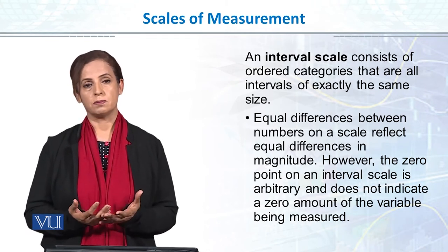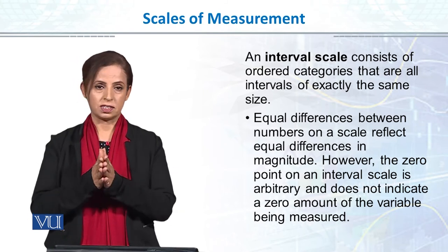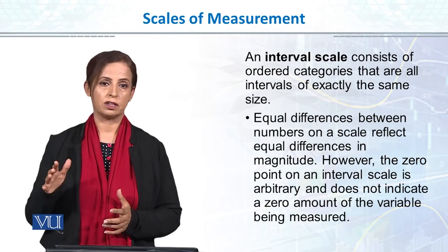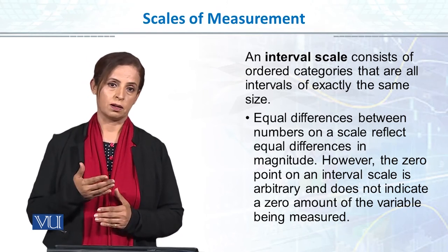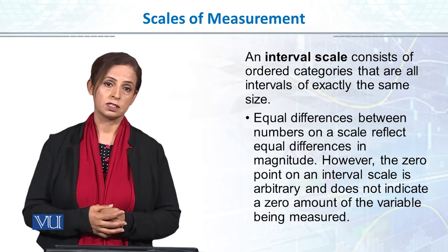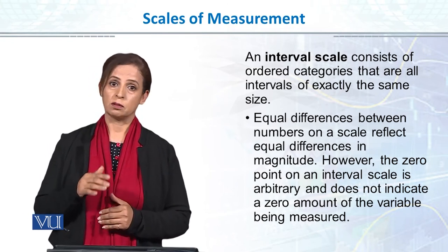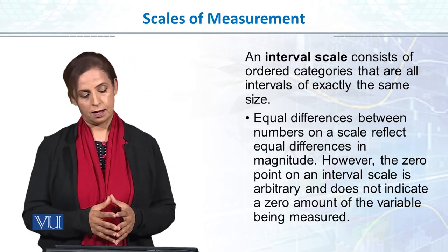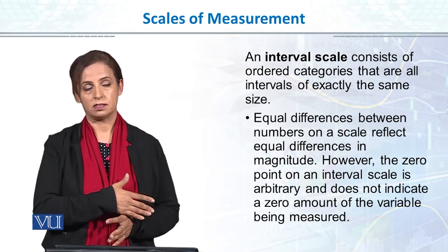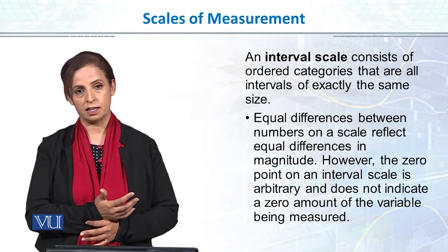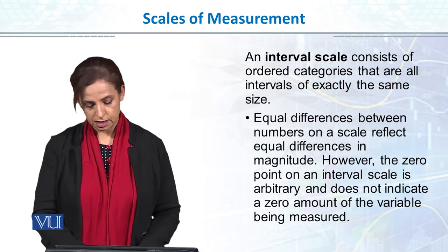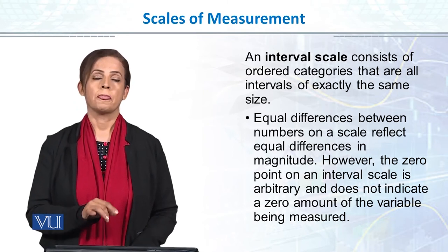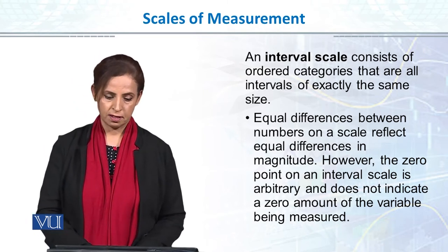For example, if I am studying job satisfaction and I have given a questionnaire and get a total score, each person has a different score — our data will be on interval scale. In psychology, most of the time when we are measuring attributes and talking about continuous variables in statistics, we are using interval scale measurement. The interval scale property is that numbers have a quantitative value and there are equal intervals between the numbers.